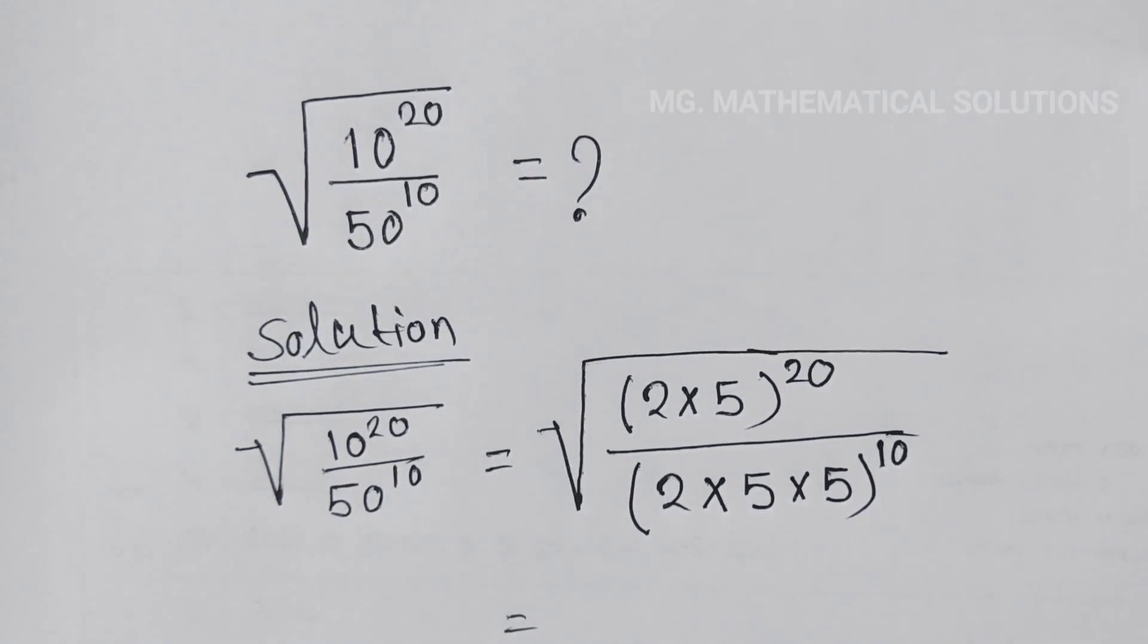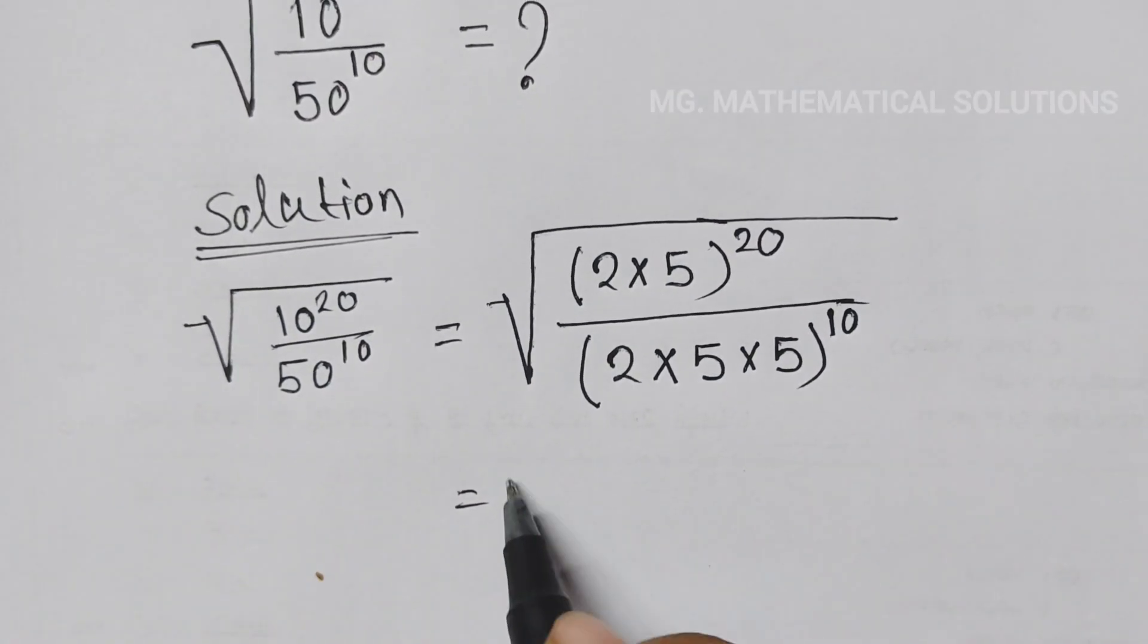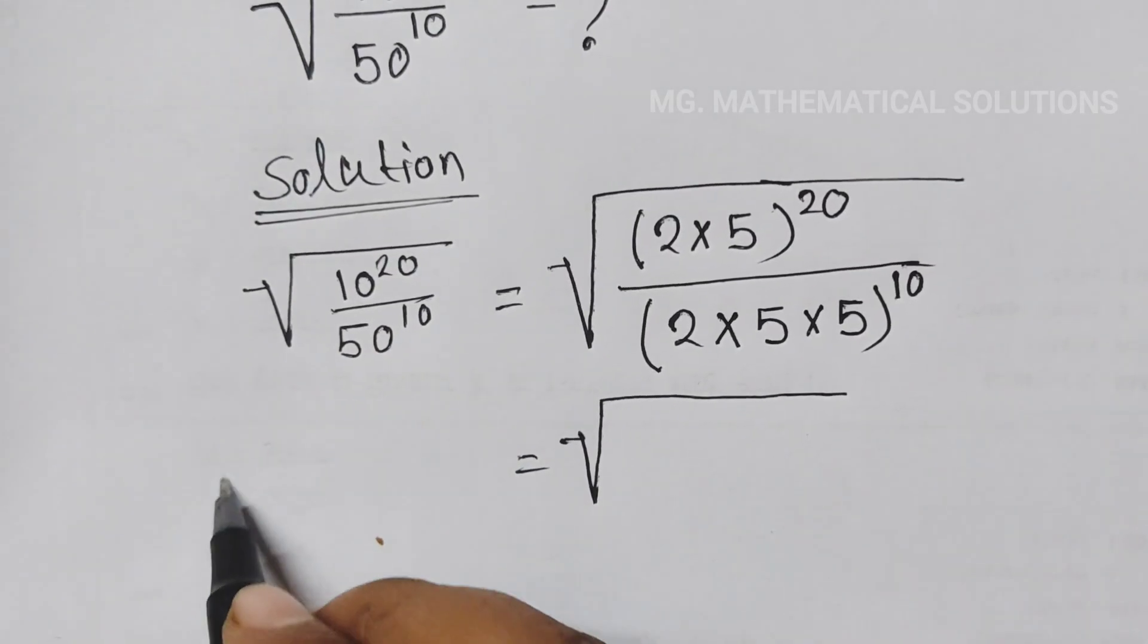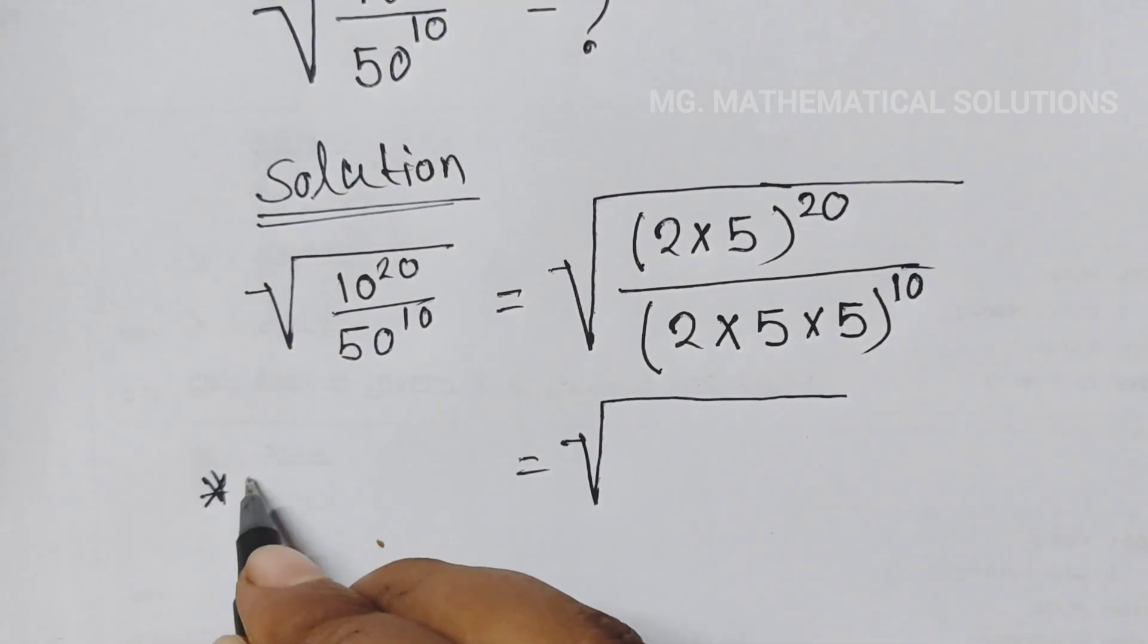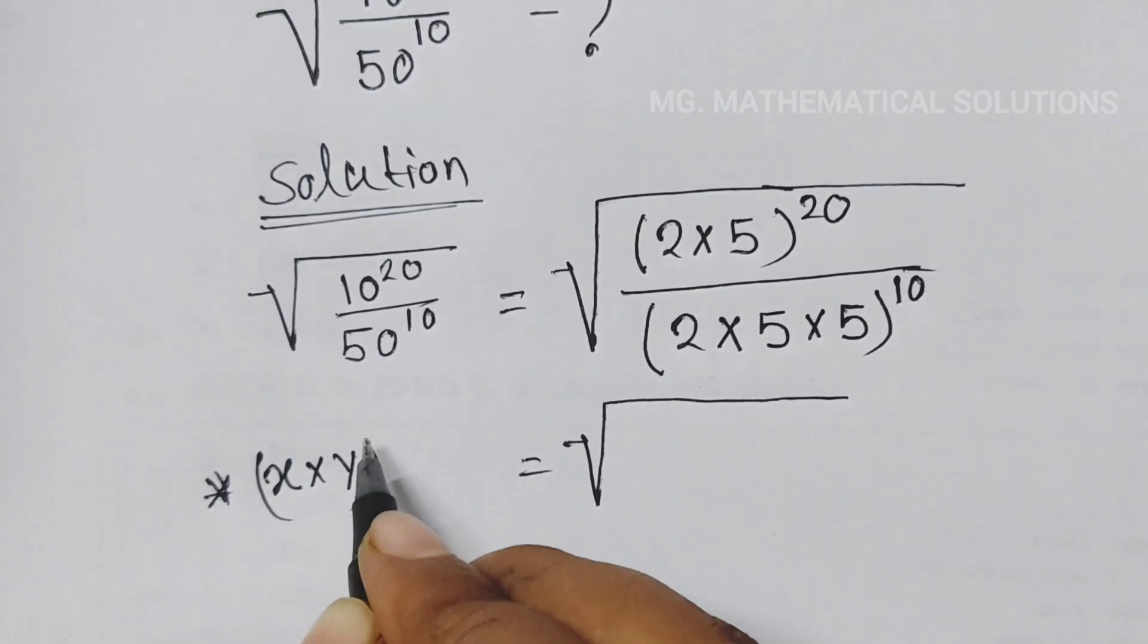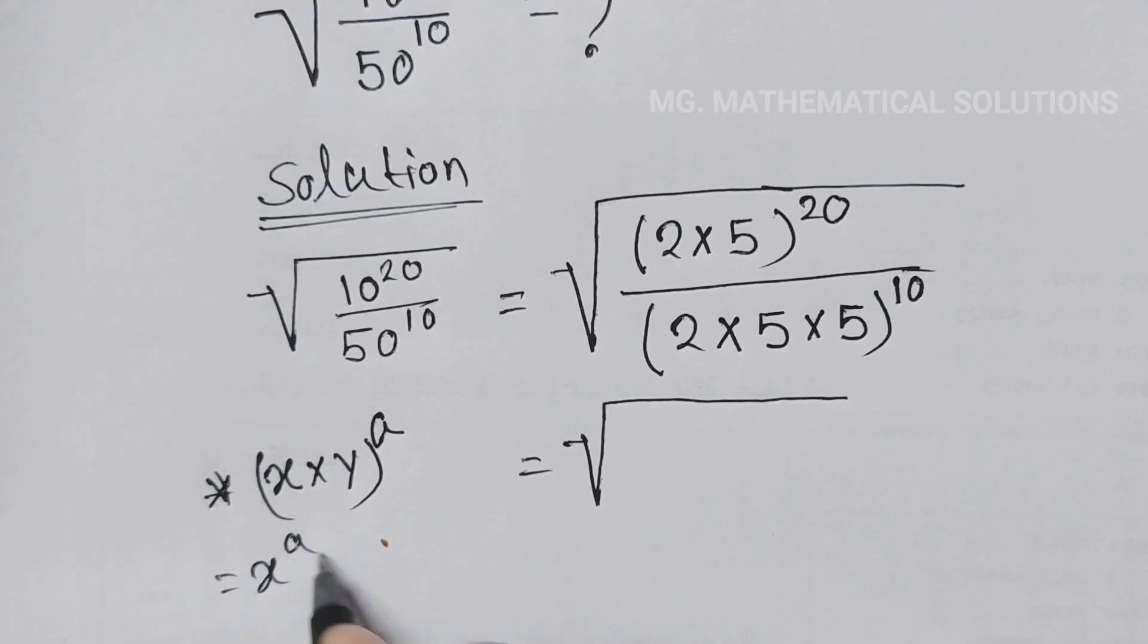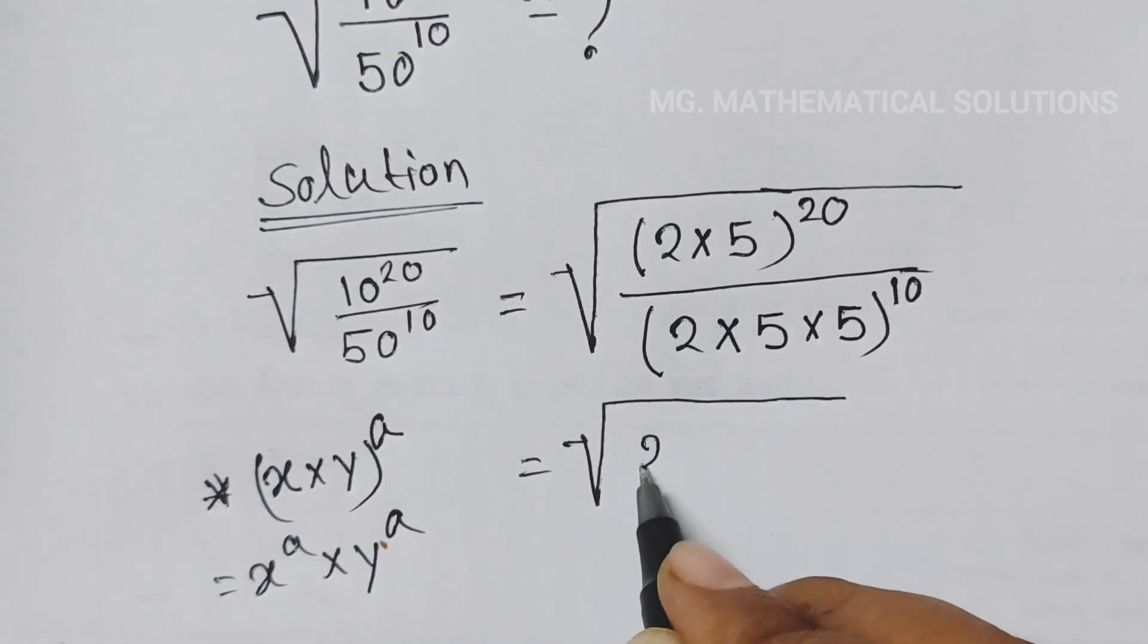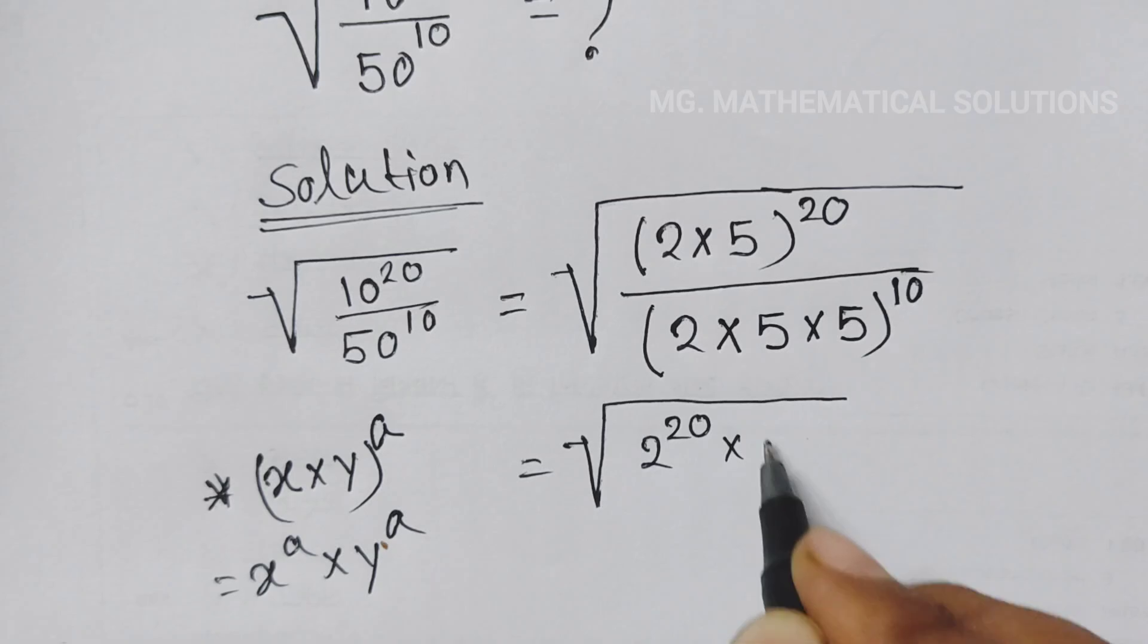We use the formula: (x times y) to the power a equals x to the power a times y to the power a. So here we can write 2 to the power 20 times 5 to the power 20...